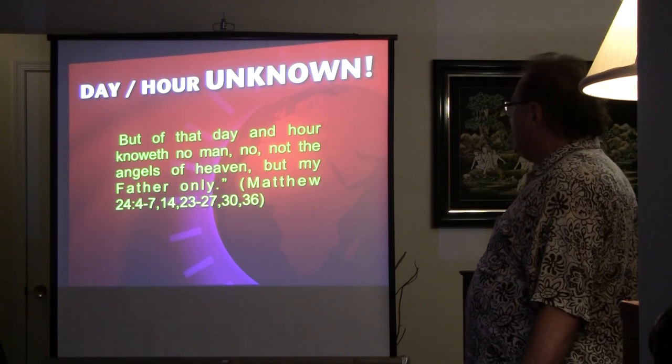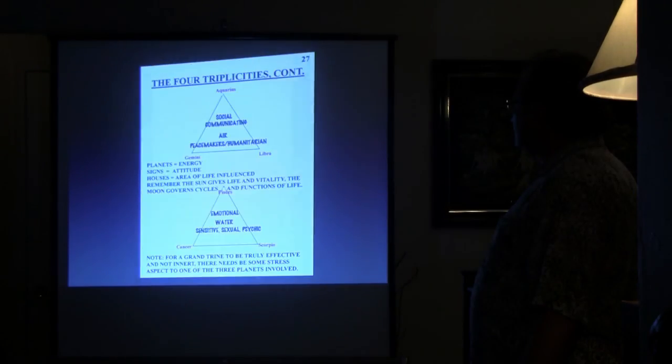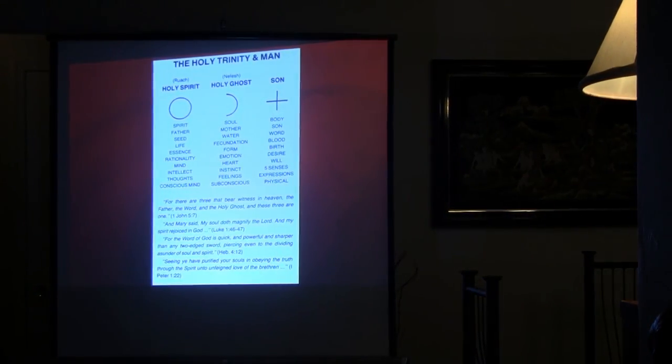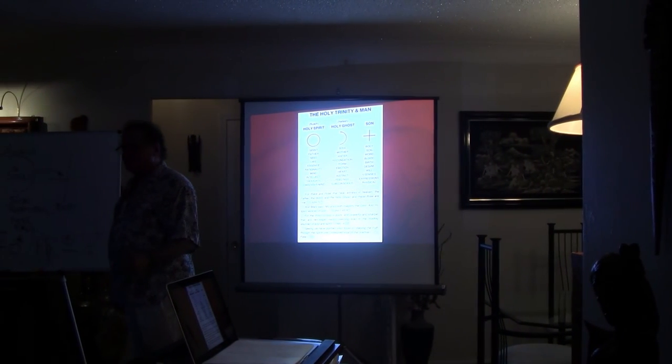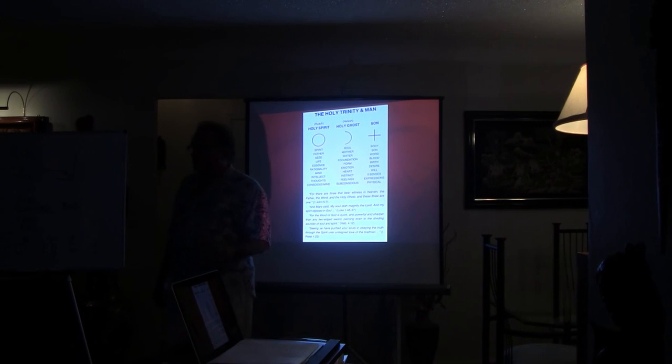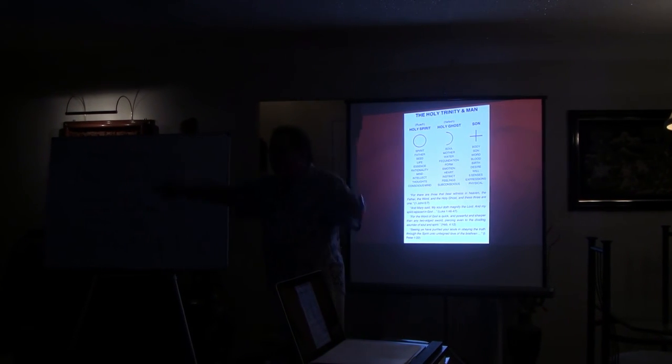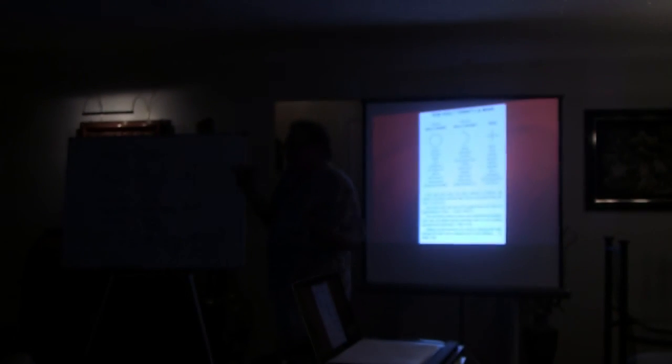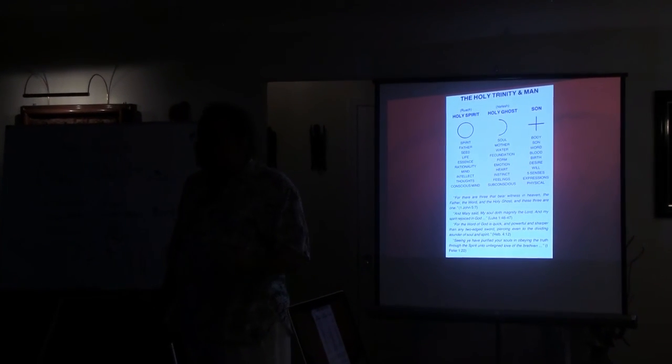But of that day and hour knoweth no man, no, not the angels of heaven, but my Father only. What it's referring to is, it says, In the last days I'll pour out my spirit upon all flesh. Your sons and daughters will prophesy. Your old men will dream dreams. Your young men will see visions. And upon my handmaidens, too, in those days, I'll pour out my spirit. And guess what? They, too, shall prophesy. Who do you think is pouring out that spirit? Aquarius. You see the symbol. It's in the heavens for you to read. And that's what it's referring to. It's a celestial event. It's not some man coming down out of the clouds.